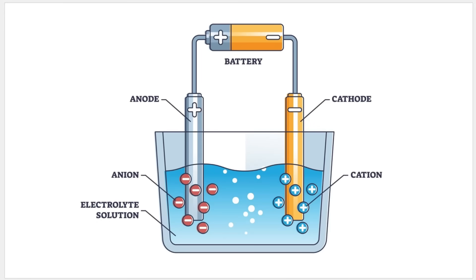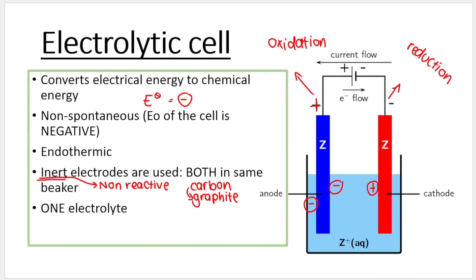So here's another nice image of what goes on. And here's another nice summary. It's also important to note that these reactions are non-spontaneous. The E naught of the cell is negative. It's non-spontaneous. We have to provide the cell with electrical energy. It won't just happen by itself. We often use inert electrodes. So inert means non-reactive, so metal that doesn't react. And generally, sometimes it's both the same. Well, it's always the same in one beaker. So both of them in one beaker. We often use carbon, one electrolyte. So this is also a nice little summary.